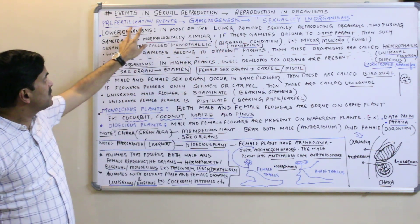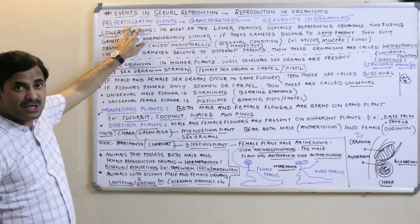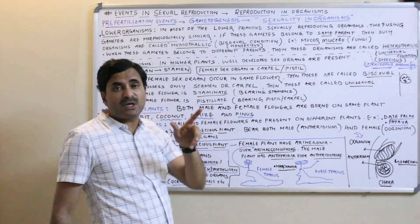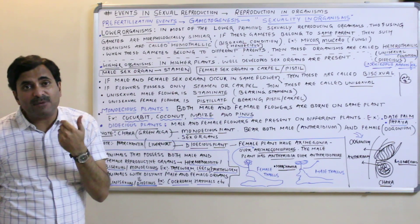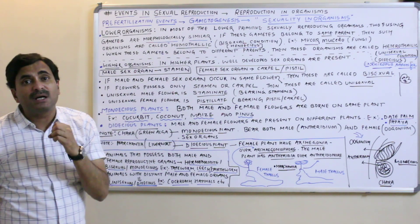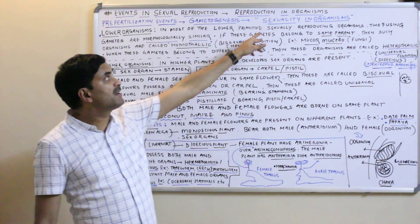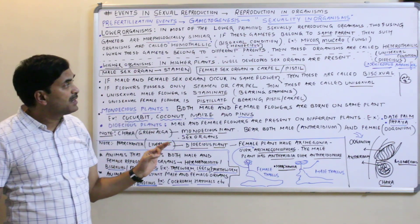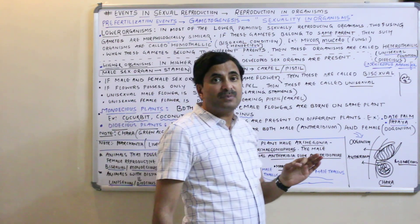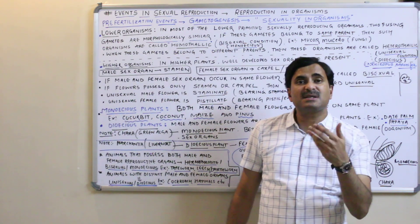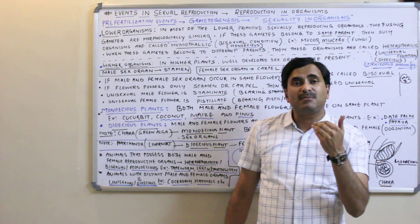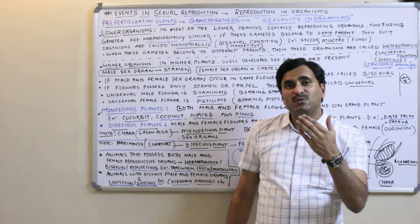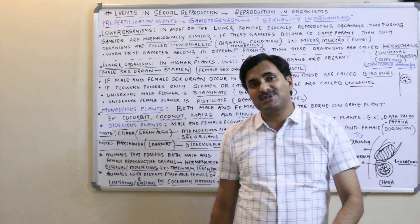This covers sexuality in organisms, studied under pre-fertilization events. We have also studied gametogenesis, isogametes, heterogametes, and the cell division during gamete formation. Thanks for watching — in the next video we will be discussing more events in sexual reproduction.